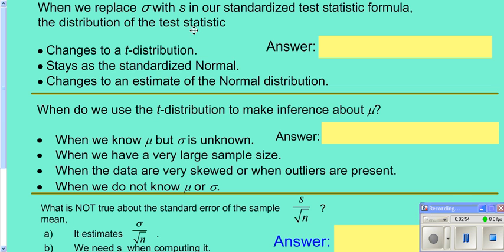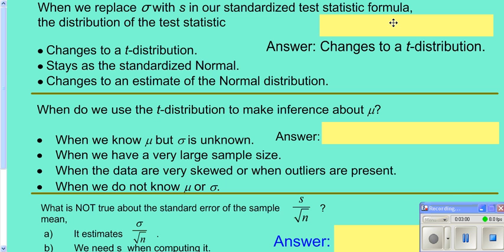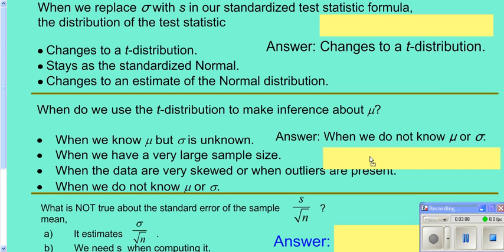So, if we replace sigma with S, we end up then using our T distribution. For our T distribution, we're trying to make conclusions about mu when we don't know mu or sigma.